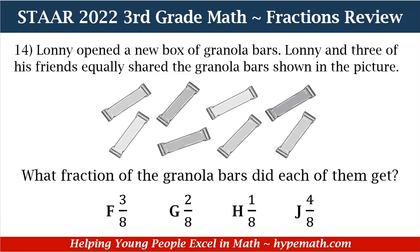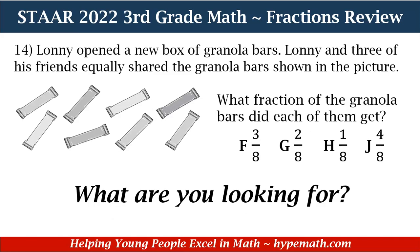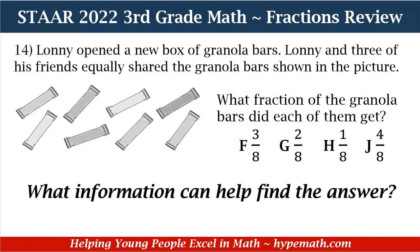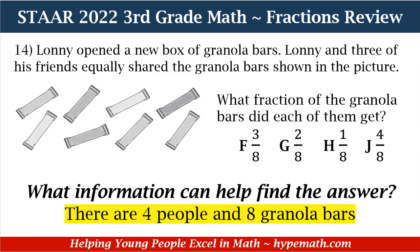Whenever we're solving a problem, the first question we need to ask ourselves is: what are we looking for? We are looking for the fraction of granola bars Lonnie and his friends will get. The second important question is: what information can help find the answer? One, there are four people — it's Lonnie plus his three friends: one plus three is four. That is how we come up with four people who will equally divide the granola bars.